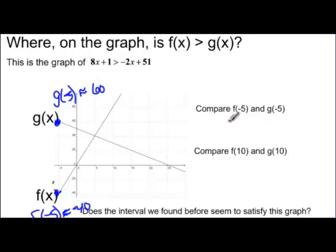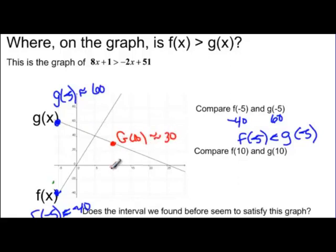So we could say that this would be negative 40 and positive 60. So f of negative 5 is less than g of negative 5. If I do f of 10 doing the same thing, I'm going to let x be 10. Now remember, this point right here is on my g line. So g of 10 looks to be approximately 30.